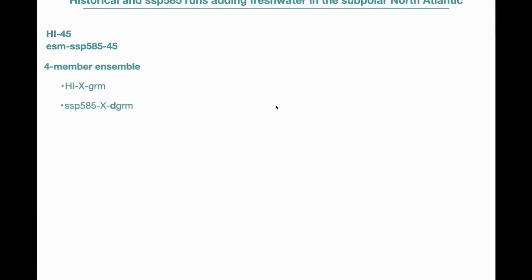Then I started a four-member ensemble for the historical and the SSP. The X in the experiment name denotes the ensemble number. That's the same for the high emissions SSP585. And here I have two scenarios for the high emissions: one that has a decadal increase in freshwater forcing, and another that has just a constant freshwater forcing.